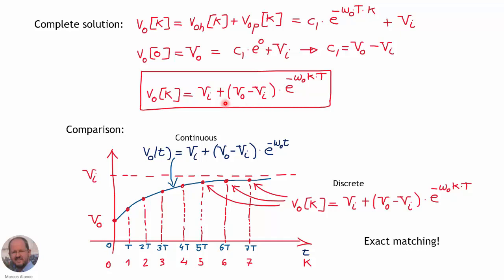Note that this closed-form solution allows us to obtain any sample directly by substitution, rather than computing sample by sample from the difference equation. Here we compare the continuous solution for the RC circuit with constant excitation — shown in blue — with the discrete output voltage samples shown as red dots, which are computed from our solution. There is an exact match, because this expression evaluates the same values as the continuous expression at each sampling instant k times the sampling period.